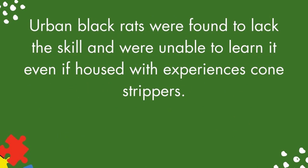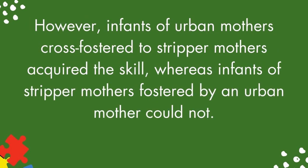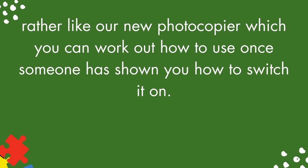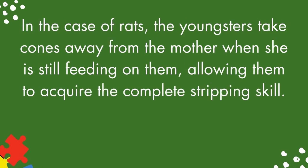Urban black rats were found to lack the skill and were unable to learn it even if housed with experienced cone strippers. However, infants of urban mothers cross-fostered to stripper mothers acquired the skill, whereas infants of stripper mothers fostered by an urban mother could not. Clearly, the skill had to be learned from the mother. Further elegant experiments showed that naive adults could develop the skill if provided with cones from which the first complete spiral of scales had been removed — rather like a new photocopier which you can work out how to use once someone has shown you how to switch it on. In the case of rats, the youngsters take cones away from the mother when she is still feeding on them, allowing them to acquire the complete stripping skill.